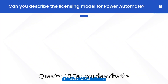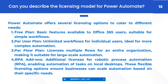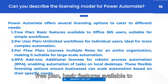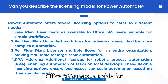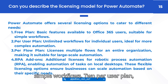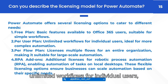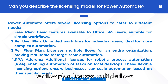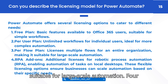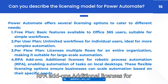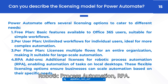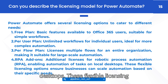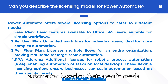Question 15: Can you describe the licensing model for Power Automate? Answer: Power Automate offers several licensing options to cater to different needs. One, free plan: basic features available to Office 365 users, suitable for simple workflows. Two, per user plan: unlimited workflows for individual users, ideal for more complex automation. Three, per flow plan: licenses multiple flows for an entire organization, making it suitable for large-scale automation. Four, RPA add-ons: additional licenses for robotic process automation, enabling automation of tasks on local desktops. These flexible licensing options ensure businesses can scale automation based on their specific needs.